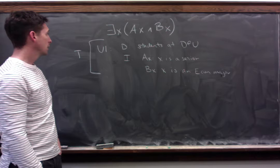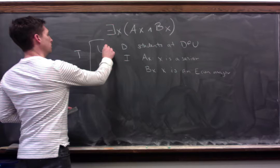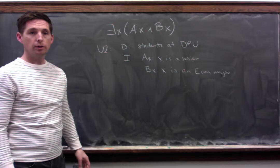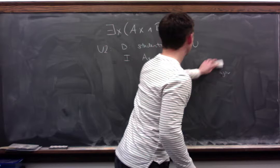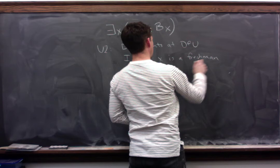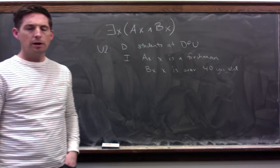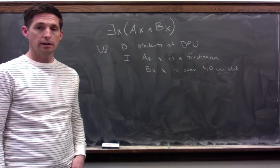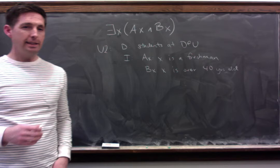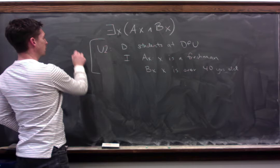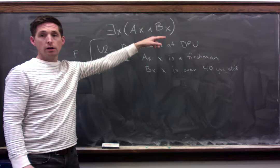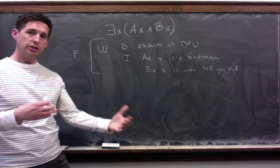Let's consider a different universe — Universe 2. We'll keep the domain the same as students at DePauw, but change the interpretation. We let Ax mean 'x is a freshman' and Bx mean 'x is over 40 years old.' Think about whether this formula is true or false given Universe 2. This formula is actually false. It says some students at DePauw are both freshmen and over 40 years old, but there aren't any such students at DePauw. So the formula is false.